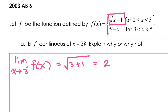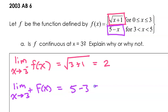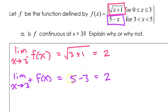Now, what about the limit as x approaches 3 from the right? The function on the right is defined by 5 minus x. So the limit as x approaches 3 from the right of f(x), by direct substitution, we have 5 minus 3, which again is equal to 2.